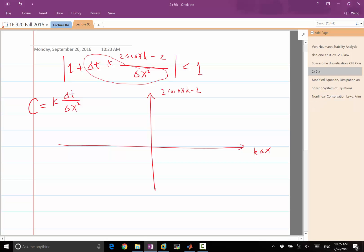This constant times this quantity plus 1 is going to be the deciding factor in the stability analysis. Let's look at what this is.